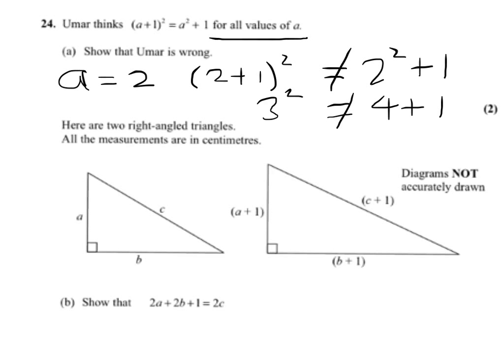The second part, we've got to show the relationship between 2a, 2b, and 2c. So what we can deduce using Pythagoras' rule in the first triangle is that c² equals a² + b². In the second triangle, we will have (c+1)² equals (a+1)² + (b+1)².